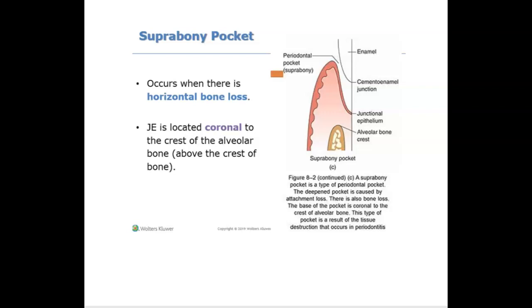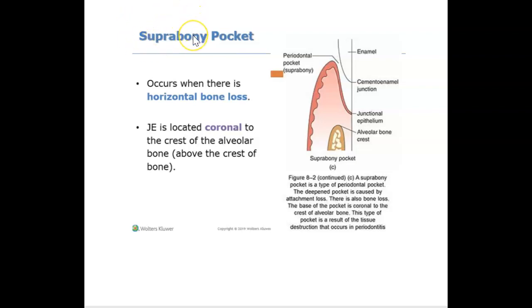In this video we're going to look at the difference between suprabony pocket and infrabony pocket, and it's really simple. Supra means above and bony comes from the word bone, so something is above the bone. What is above the bone? In this case, if we look, this is the junctional epithelium.